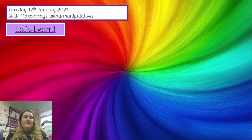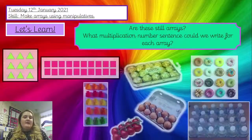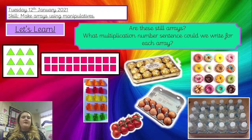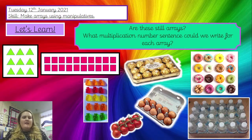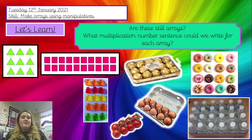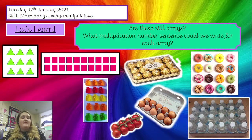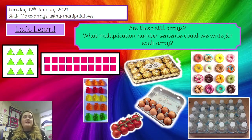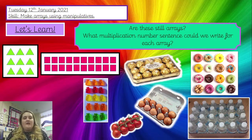Let's have a look at these images. Are they still arrays? They all look very different to the arrays we've seen so far. Yes, they are still arrays — they are still ordered in rows and columns, and we can still use them to solve multiplication number sentences. Have a look at the different arrays and think what multiplication number sentence we could write for each one. If we look at the first one, for example, we've got three rows and three columns, so we've got three times three, and three times three equals nine. Pause the video and look at each of the other images as well.